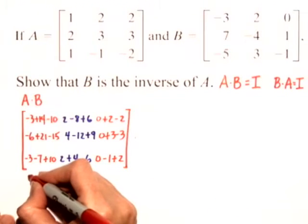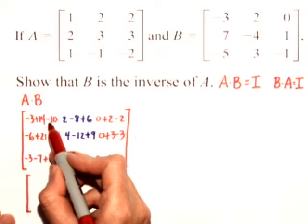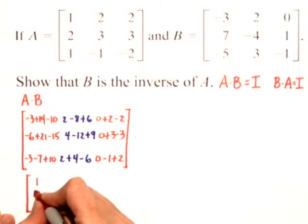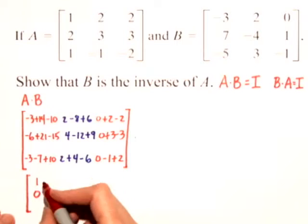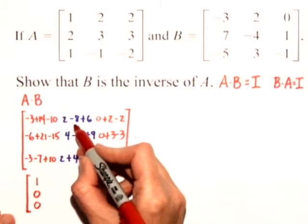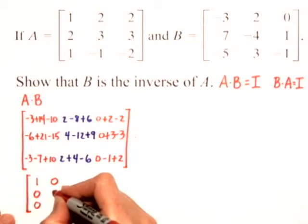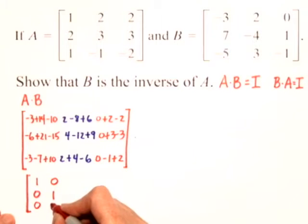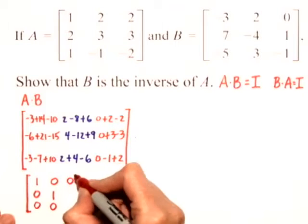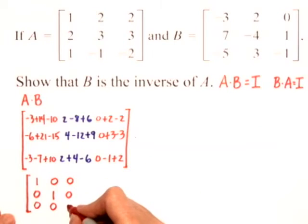Now I'll simplify this matrix to show that it is the identity matrix. Negative 3 plus 14 minus 10 gives 1. Negative 6 plus 21 minus 15 gives 0. Negative 3 minus 7 plus 10 is 0. Going down the middle column in blue: 2 minus 8 plus 6 is 0. 4 minus 12 plus 9 is 1. 2 plus 4 minus 6 is 0. The third column: 0 plus 2 minus 2 is 0. 0 plus 3 minus 3 is also 0. 0 minus 1 plus 2 is 1.